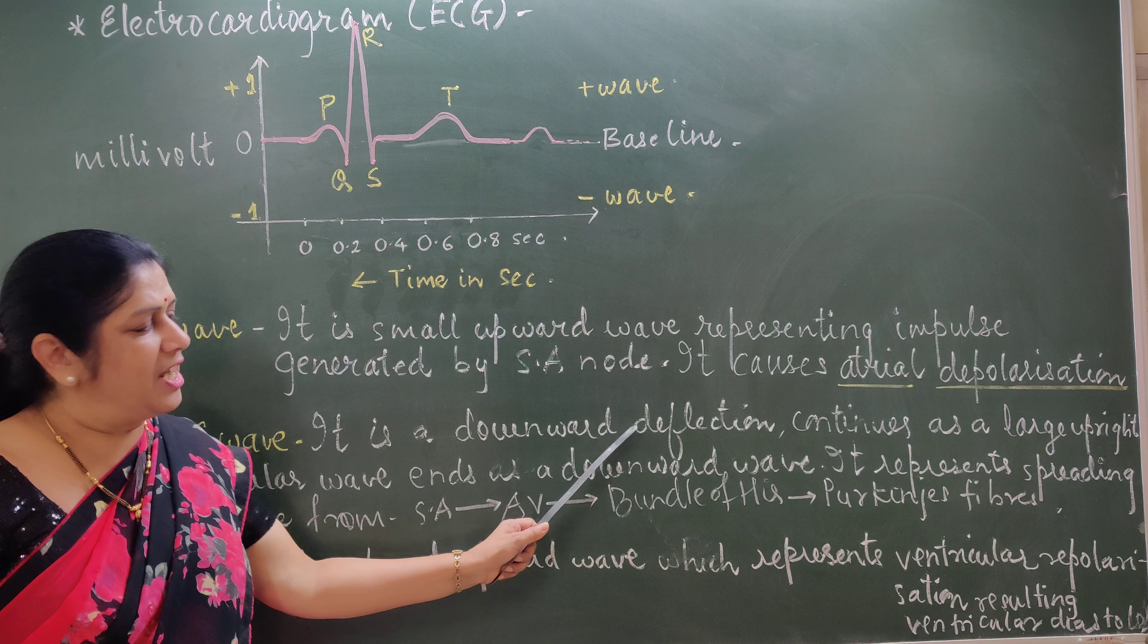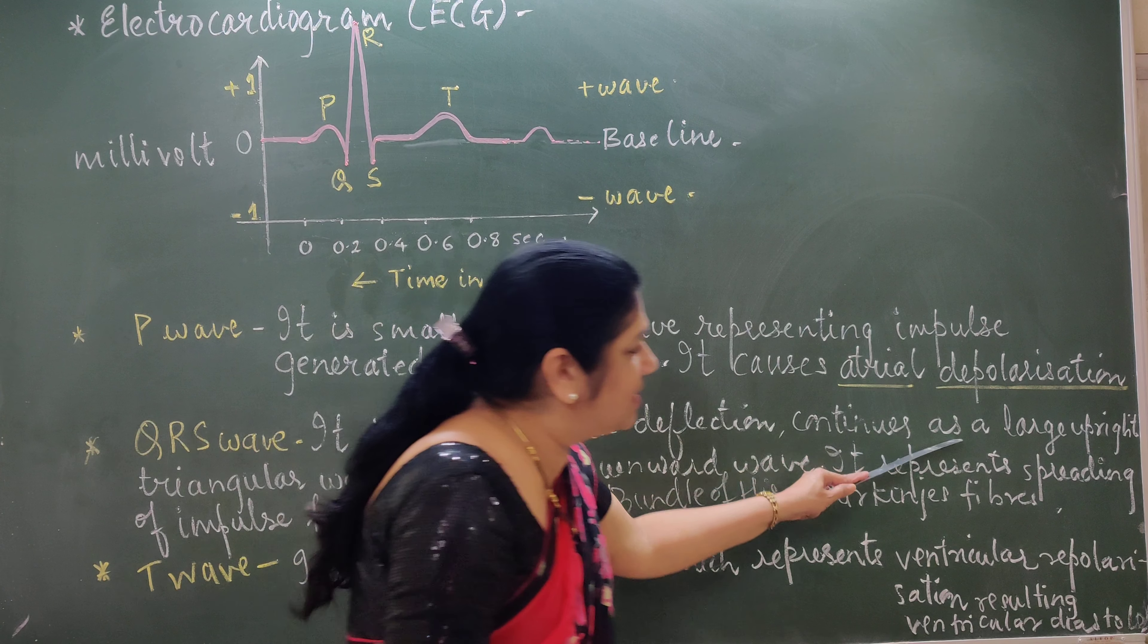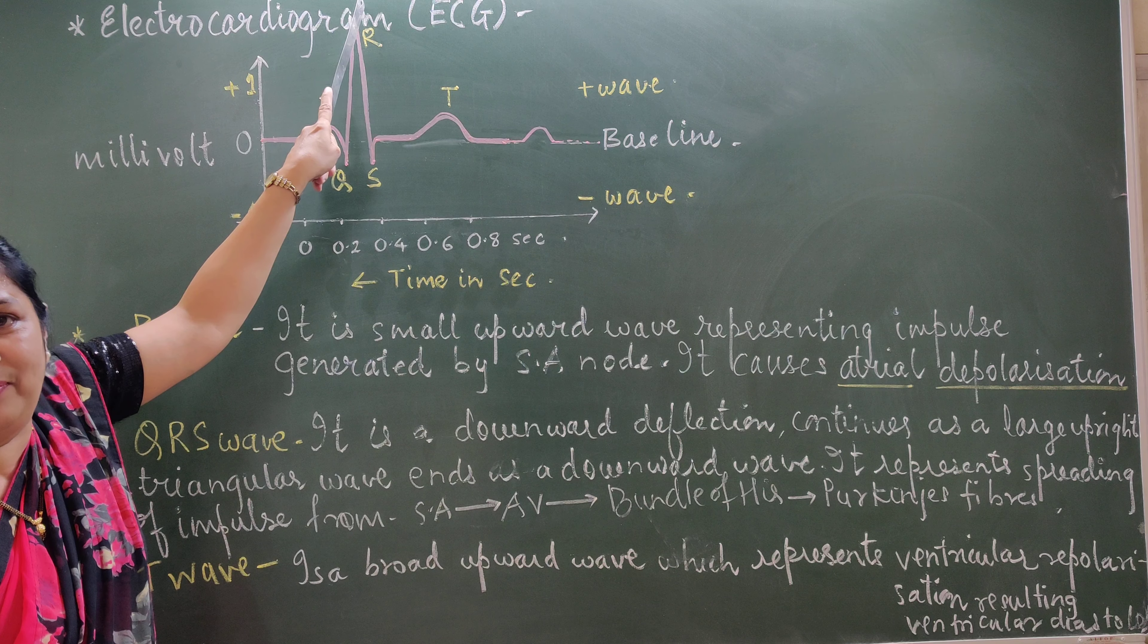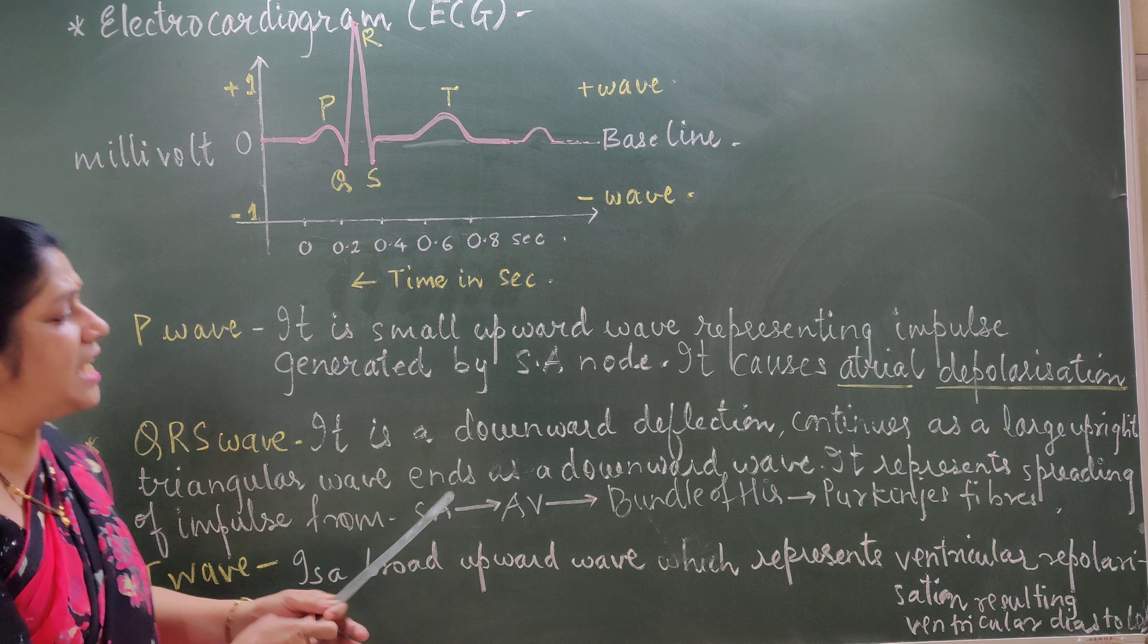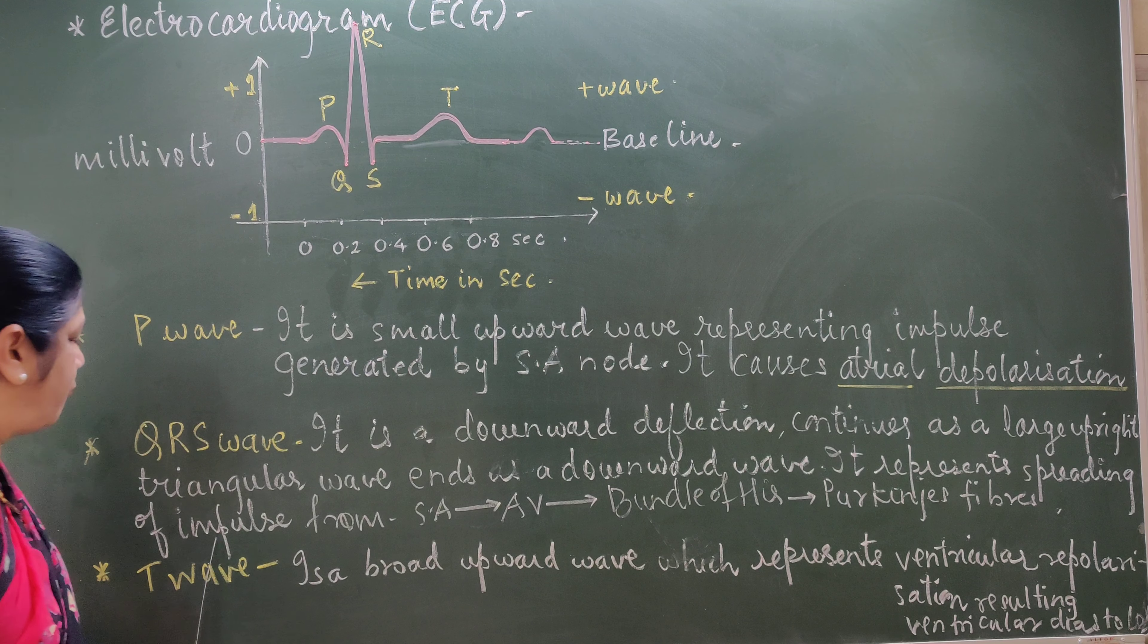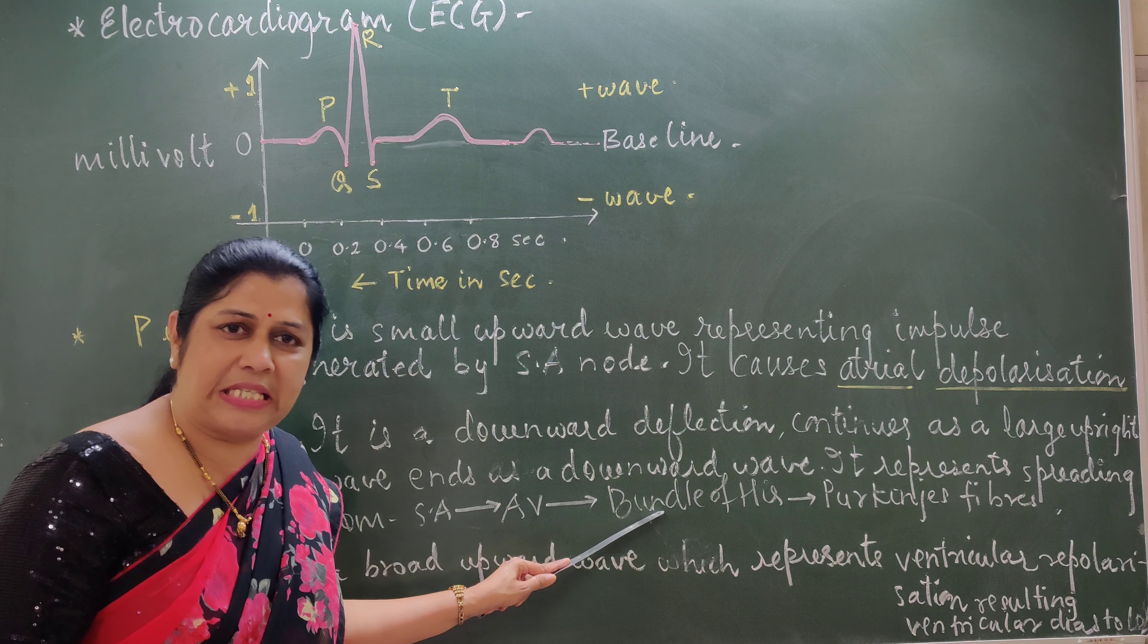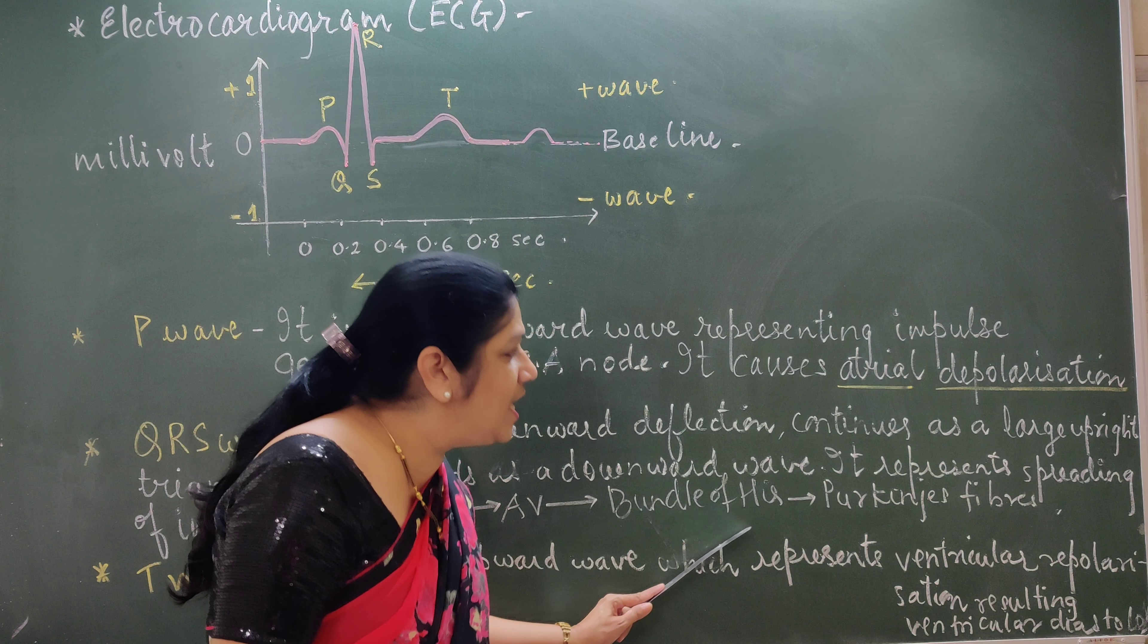It is a downward deflection, continues as a large upright triangular wave. See from here, from P, it came towards the lower side. Again, it will be in the upright position forming the sharp triangle. So here, a large upright triangular wave ends as a downward wave. It represents the spreading of impulse from SA node to AV node. From AV node, it is conducted towards the bundle of His and from bundle of His to Purkinje fibers, which shows ventricular depolarization.